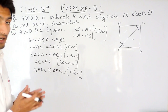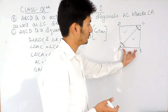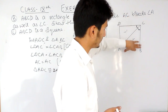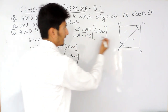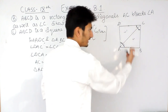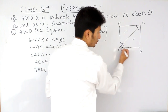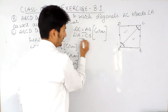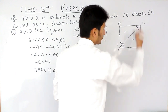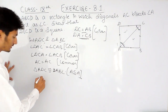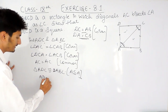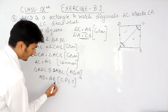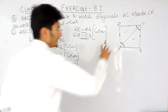Since these two triangles are congruent, obviously this side must be equal to this side. So AD is equal to AB — this is by CPCT, corresponding parts of congruent triangles. This side of triangle ADC is equal to this side of triangle ABC. This gives us our third equation.